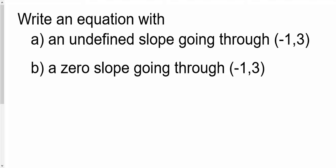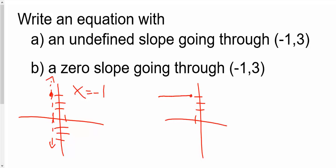Write an equation with an undefined slope going through negative 1, 3, and a zero slope going through negative 1, 3. The easiest way to do this is to plot the point negative 1, 3. The undefined line is right there. This one only goes through the x-axis, so it's going to be x equals negative 1. And then do the same thing over here. Here's negative 1, 3. Draw the horizontal line. Because it's got to have a zero slope, it has to be a horizontal line. It only goes through the y-axis. It's going to be y equals 3. Those are very typical algebra questions. It makes it much easier if you just graph them.